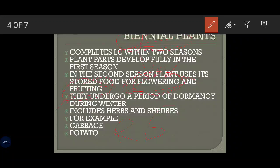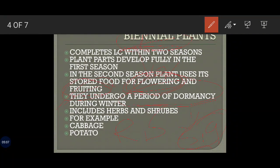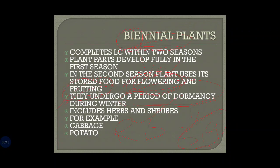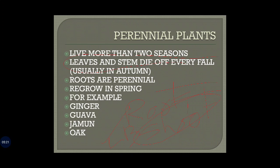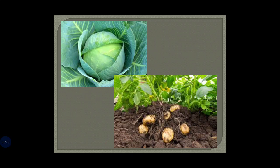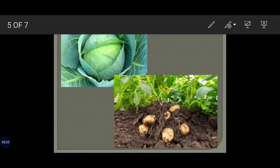During the winter time, they undergo a period of dormancy — you won't see any significant growth during winter. These plants include both herbs and shrubs, and good examples are cabbage and potato. Here you can see cabbage and this is the potato.